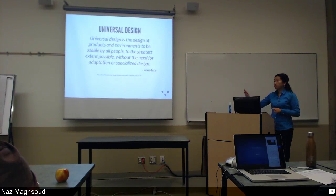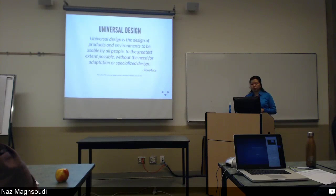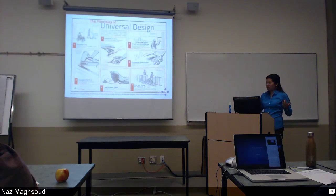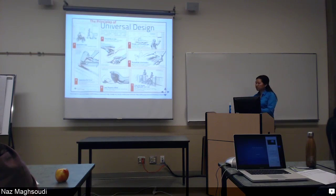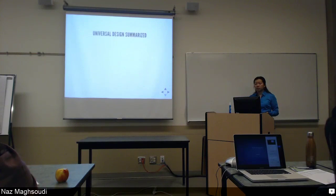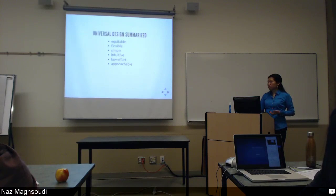So the idea is that we start thinking not about accessibility as something off a checklist, but about universal design. Universal design is defined as designing products and environments to be usable by all people to the greatest extent possible, without the need for adaptation or specialized design. The term was originally coined by an architect, and its principles can be summarized as: equitable, flexible, simple, intuitive, low effort, approachable, and usable.